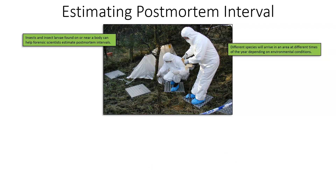Different species of insects will arrive on the body or in the area at different times. Some flies are going to be attracted to the body within minutes. Several other insects are going to come in several days later. Some insects are going to come in and feed on larvae, so they won't get there until the larvae actually establish themselves. Different times of the month, different times of the year, and different environmental conditions can impact the way insects colonize a body, and the insects have to be in an area before colonizing the body.